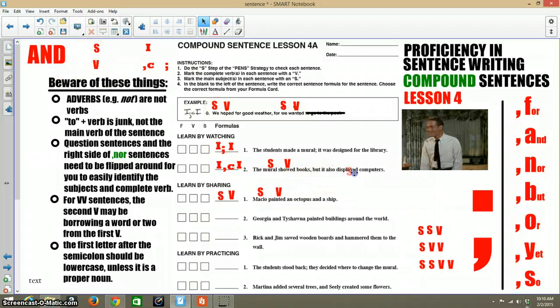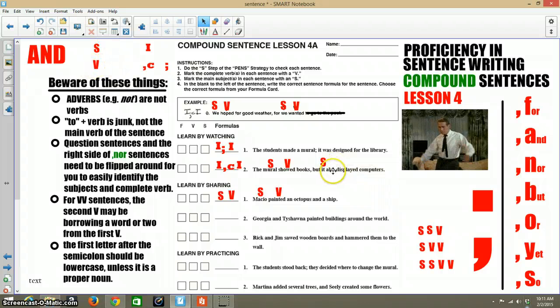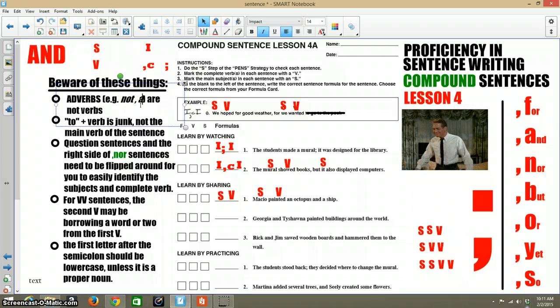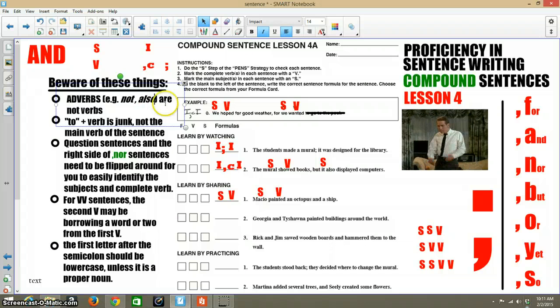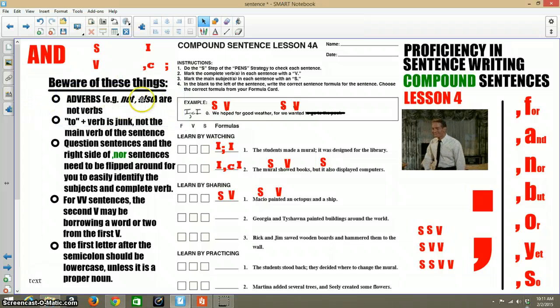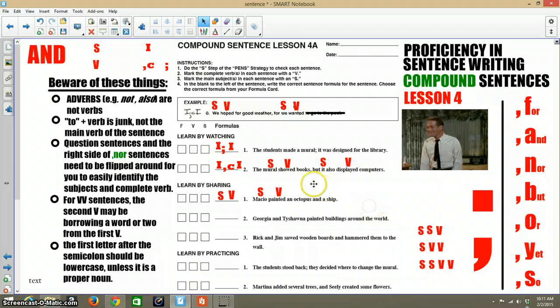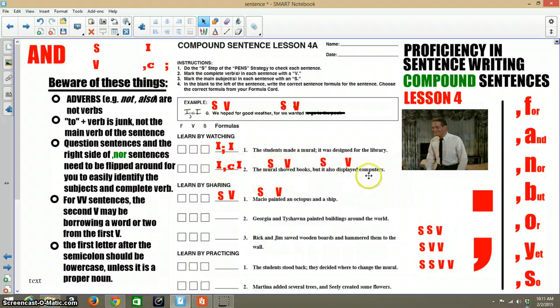It. Now, also is an adverb, just like not. Add that to the list. So, also is an adverb. So, displayed. There we go. It's just S-V, comma C, S-V. And that's the structure of this. This is how you'd have to do these.